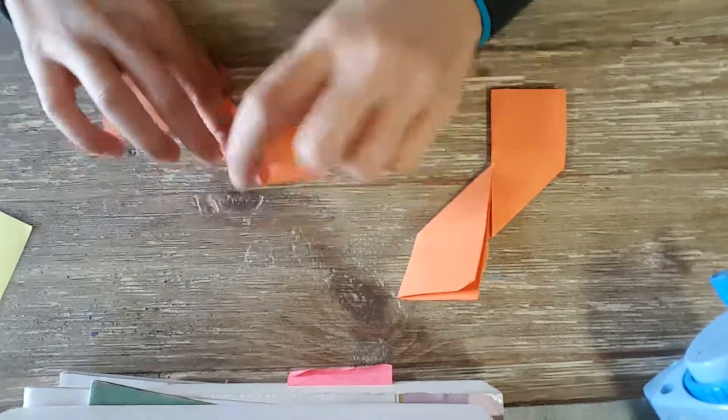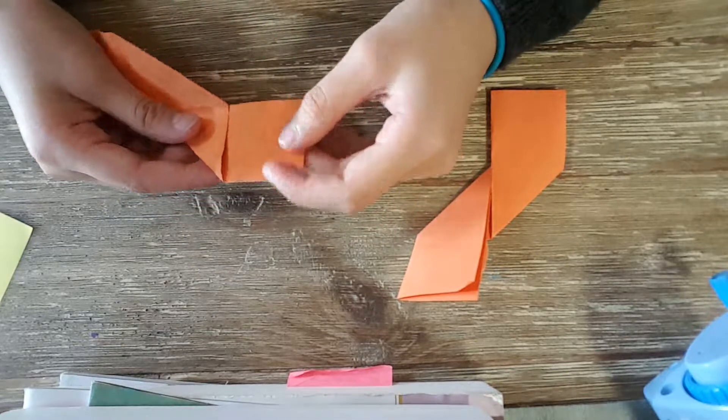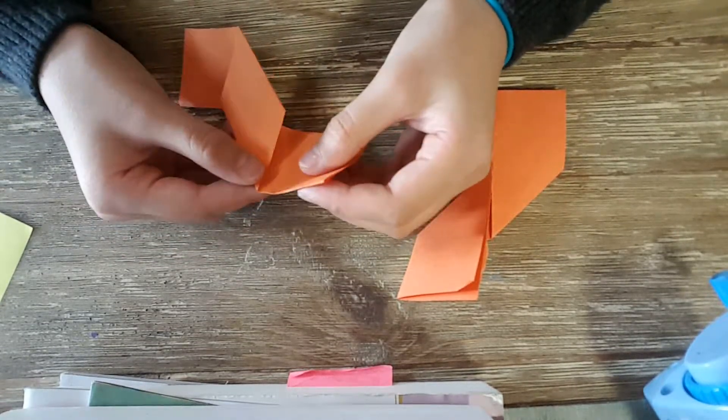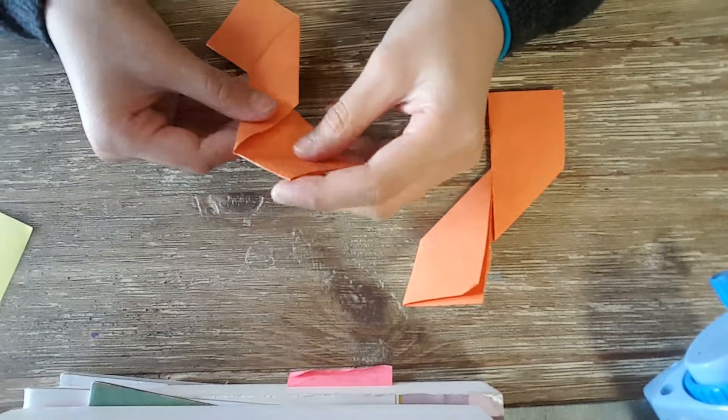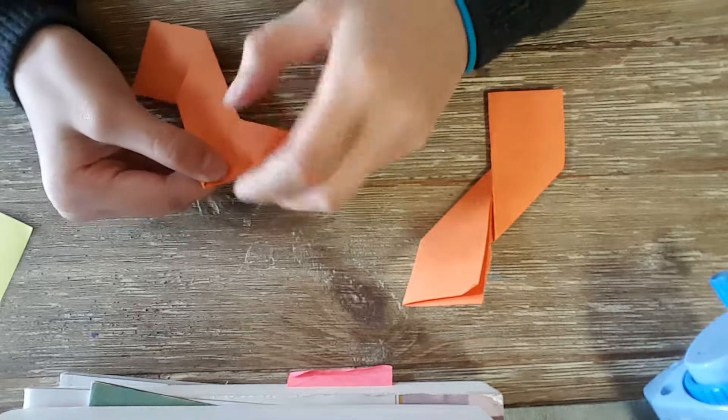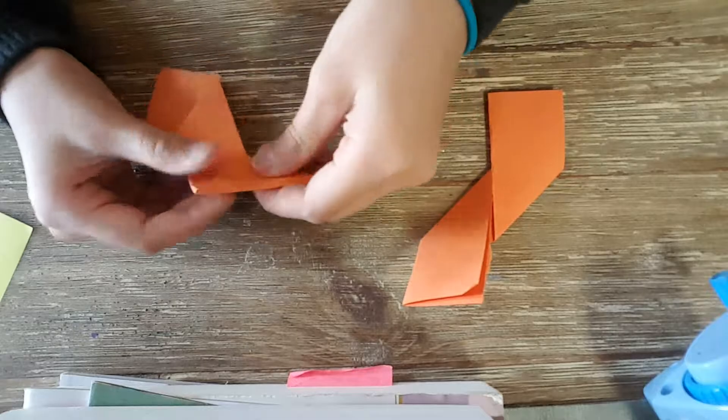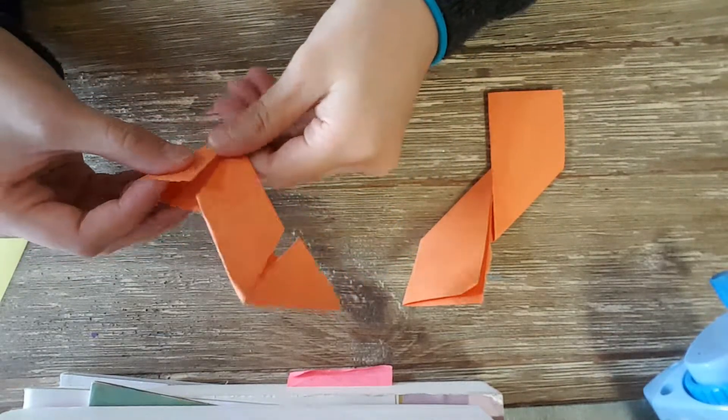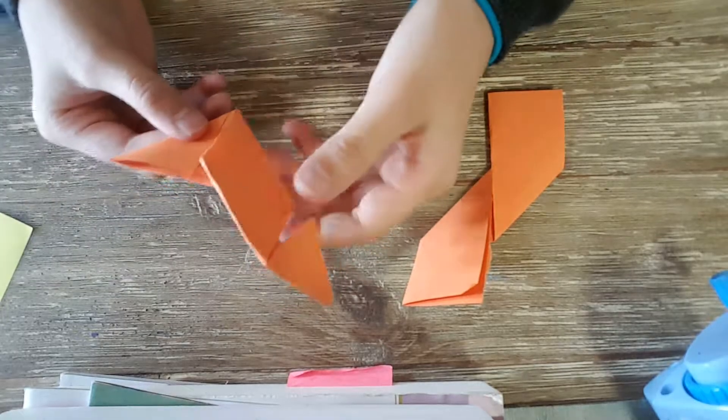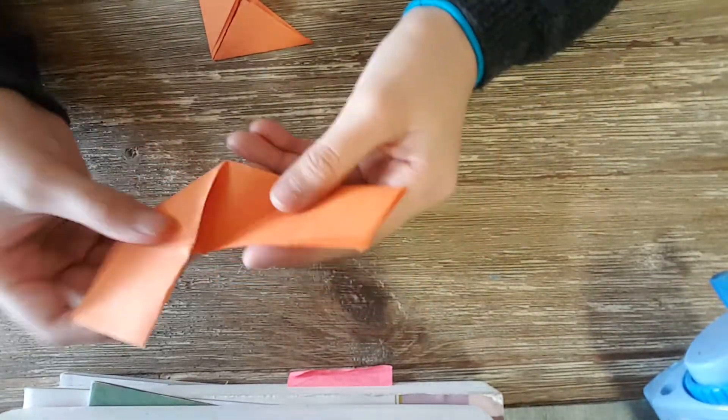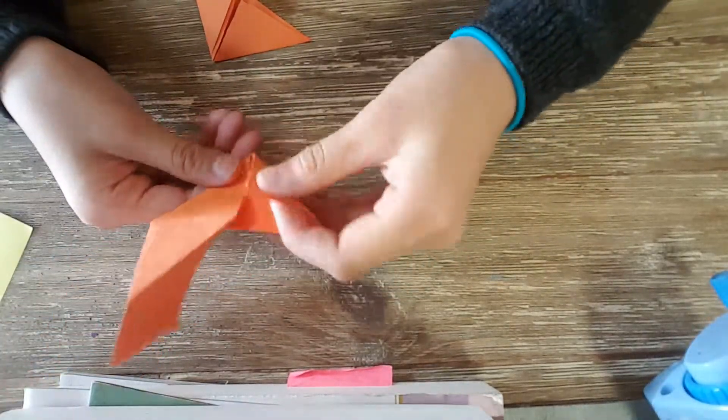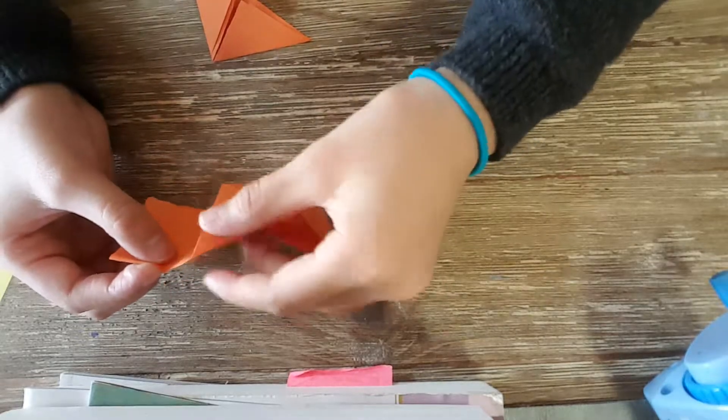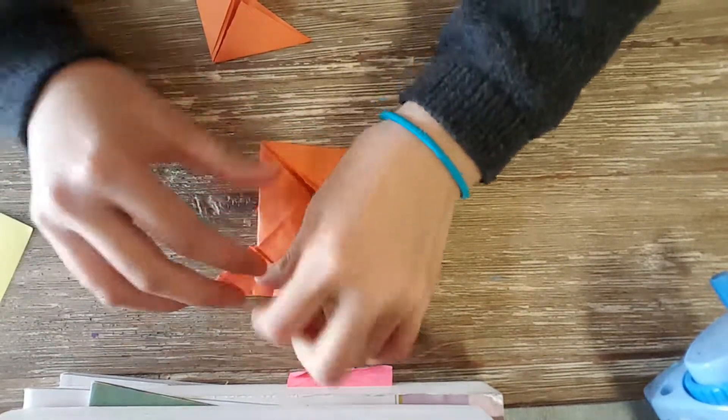Then you're going to flip them over. For the one that folded up on the left side and down on the right side, if you fold to the left and the bottom to the right, it will look like an S. For the one that you folded down on the left side and up on the right side, fold right on the top and left on the bottom, and it will look like a Z.